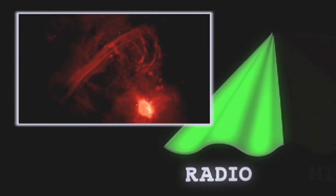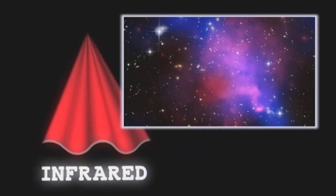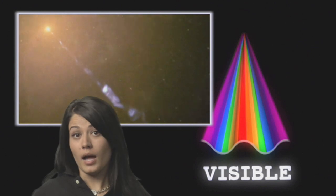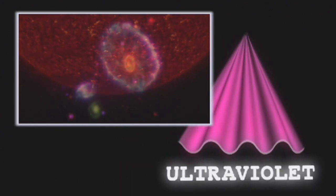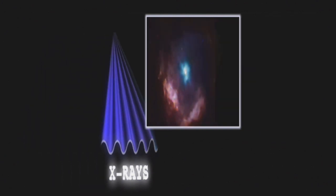From the radio waves we talked about, to microwave, infrared, and visible, that's the portion of the spectrum that we can see with our own eyes, to ultraviolet, x-ray, and gamma rays.